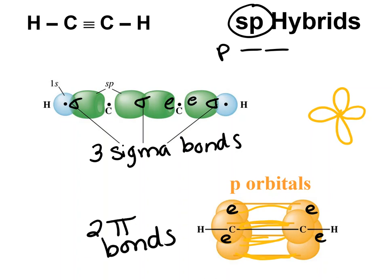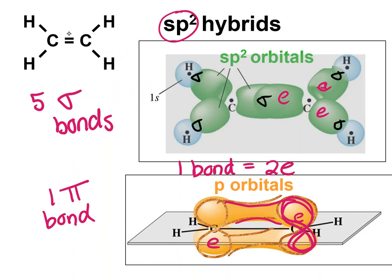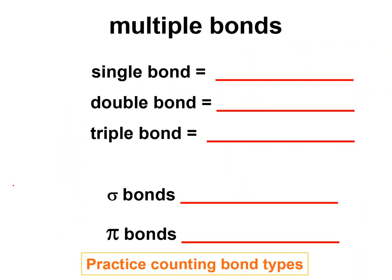Notice that a triple bond is one sigma and two pi. And if you want to go back and look at this bond, this bond is a sigma and a pi. Whenever you have a single bond, a single bond involves the hybrid. It's a sigma. If you have a double bond, then it is a sigma and one pi. Sigma from the hybrid, the pi from the p orbital. If you have a triple bond, you have one sigma and two pi bonds.